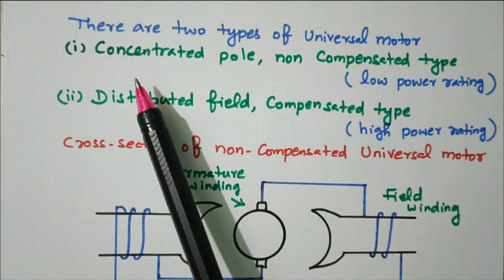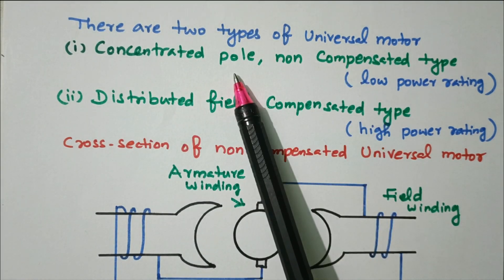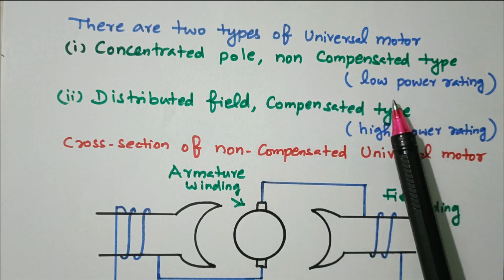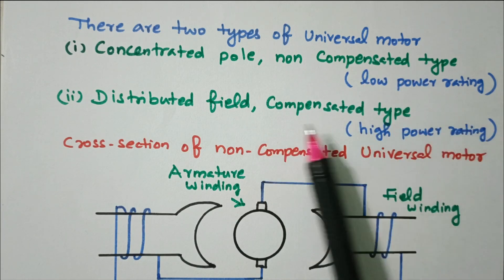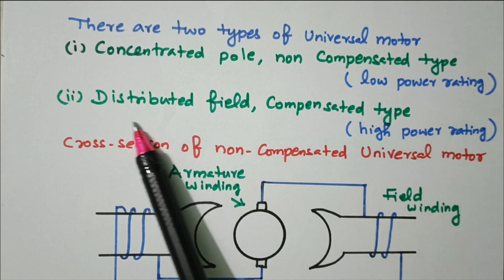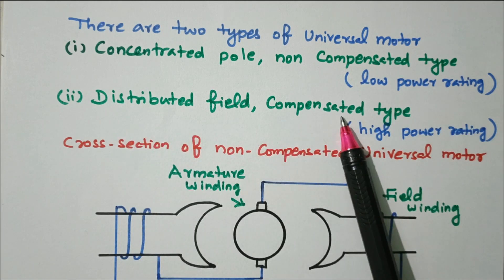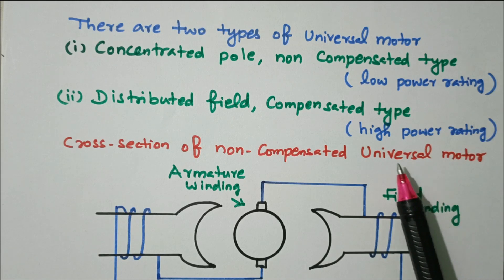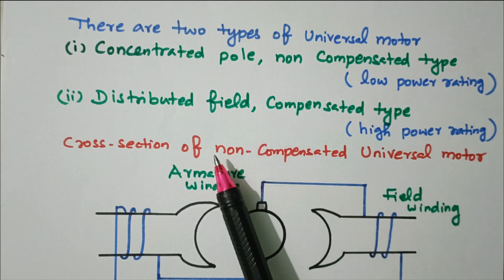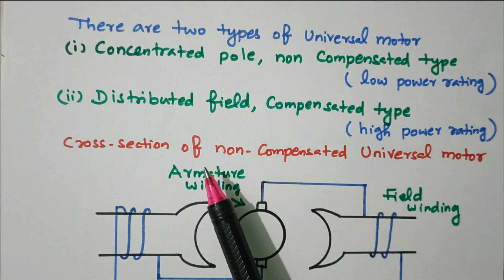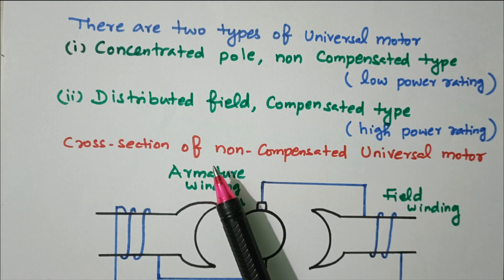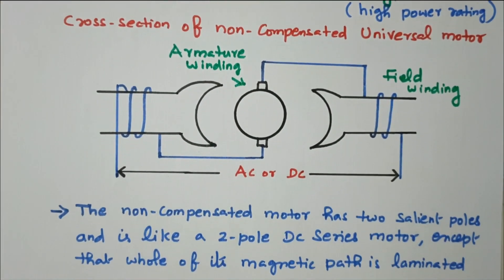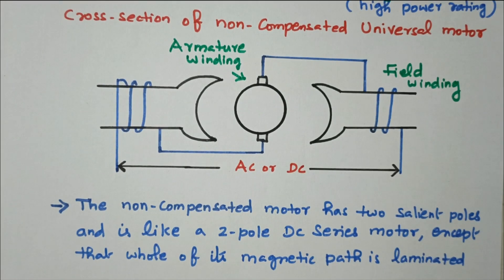One is the concentrated pole non-compensated type, which is used for low power rating. The other is the distributed field compensated type, which can be used for high power rating. We'll see what is meant by concentrated, non-concentrated, and distributed compensated in detail one by one.